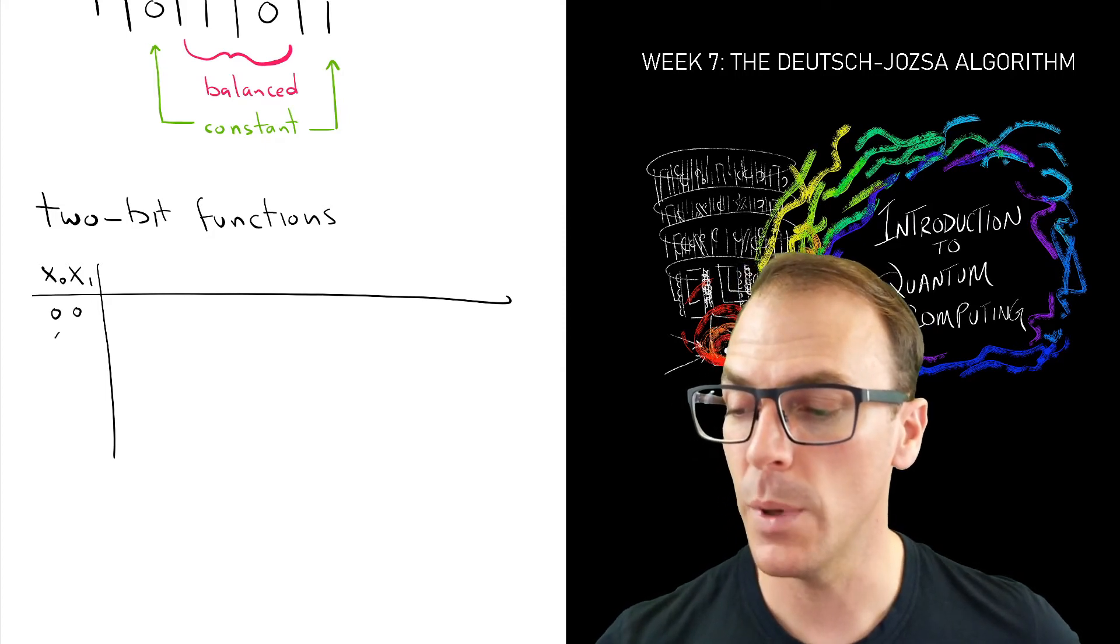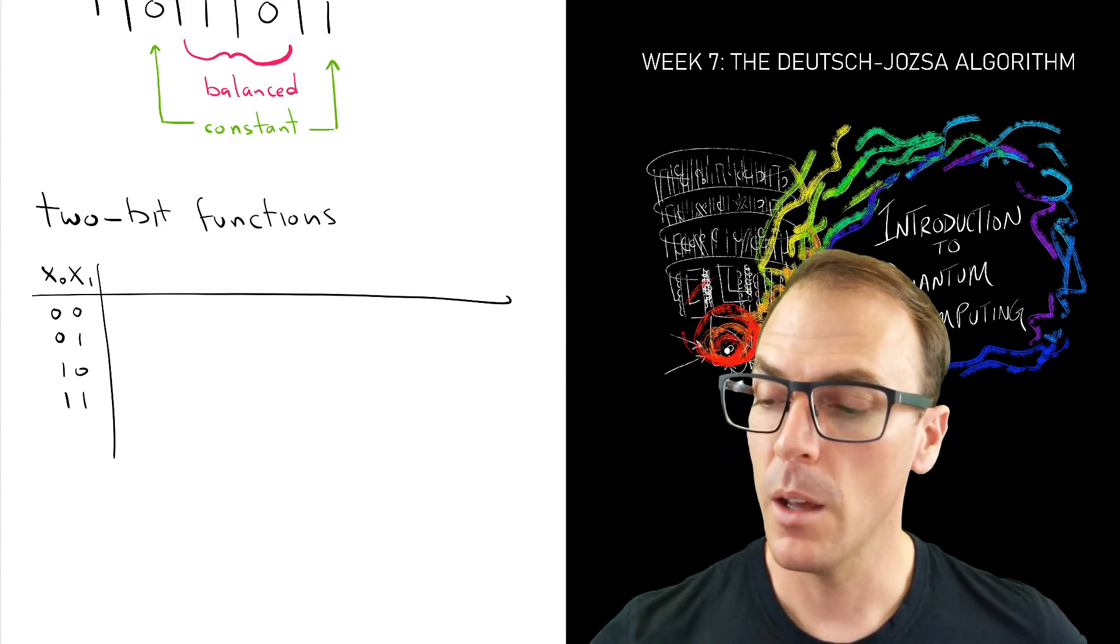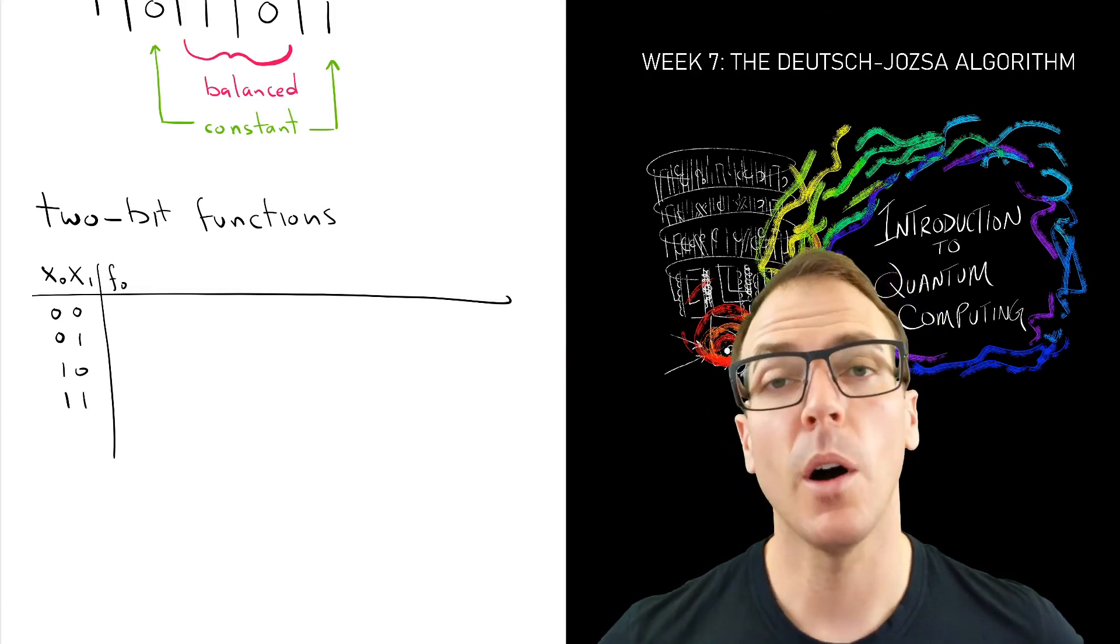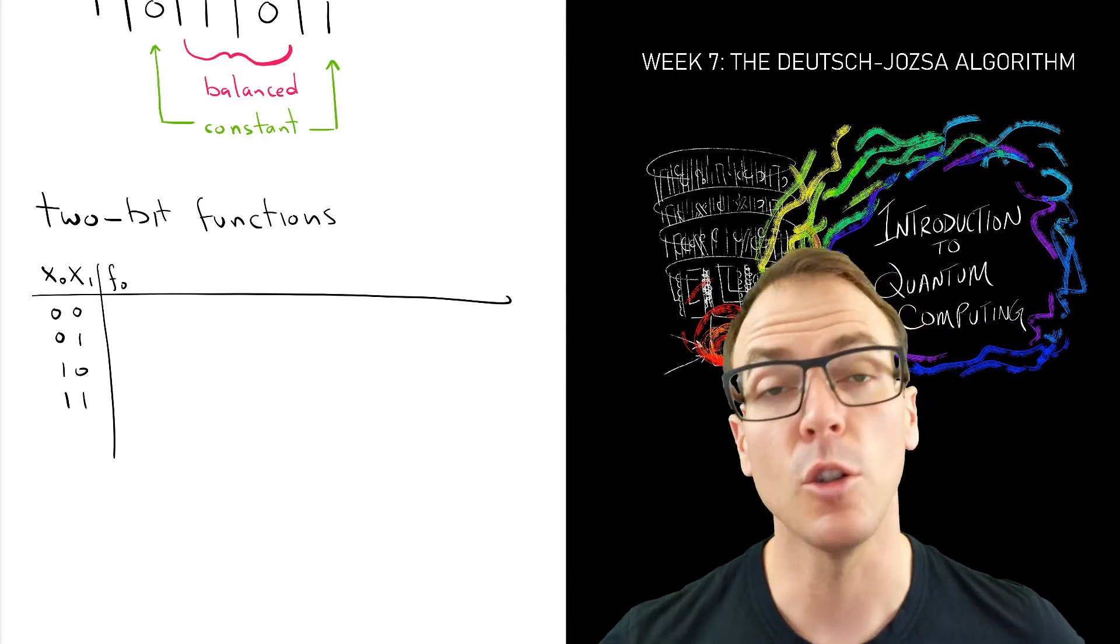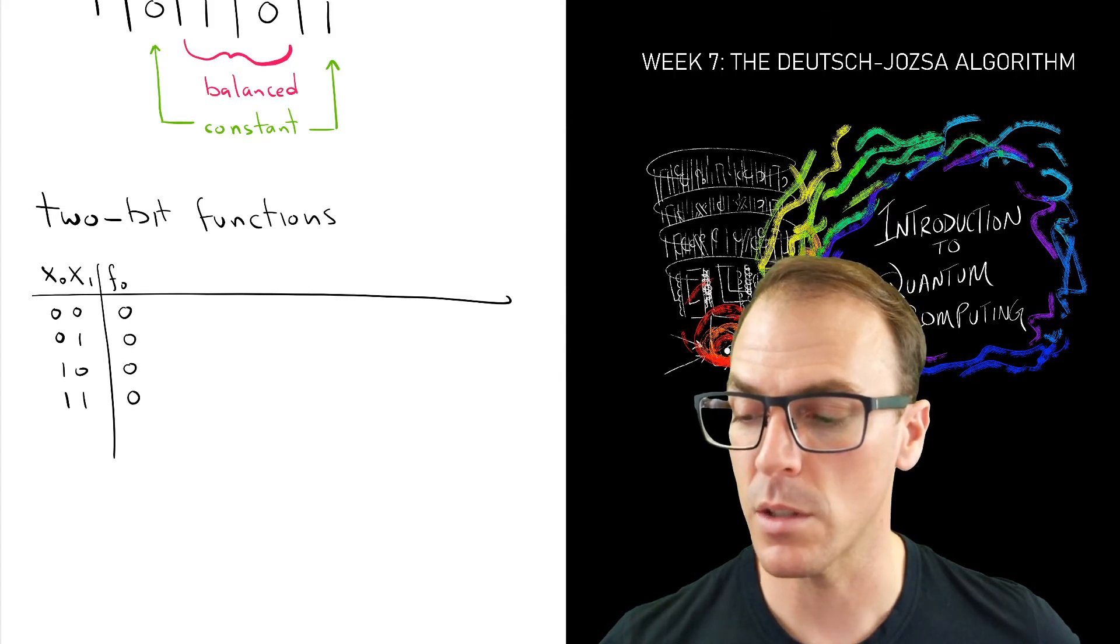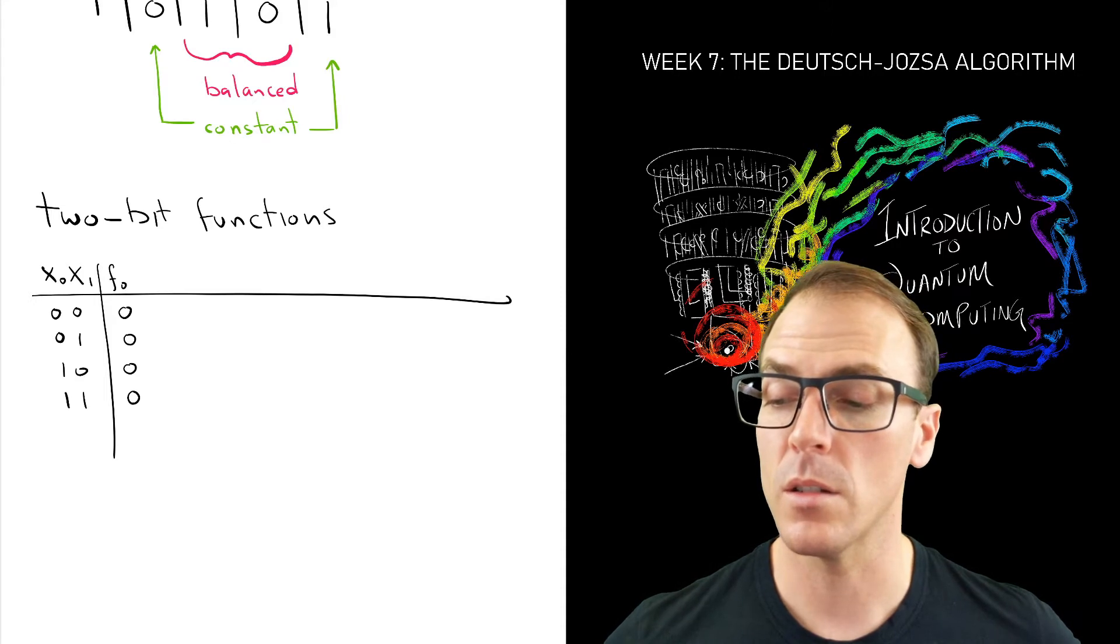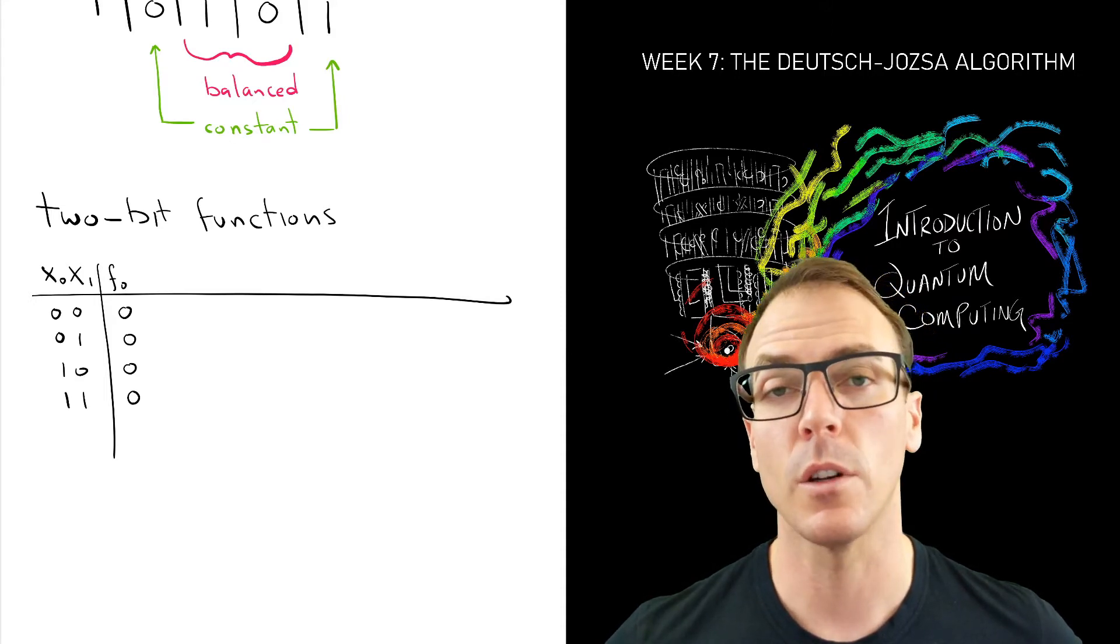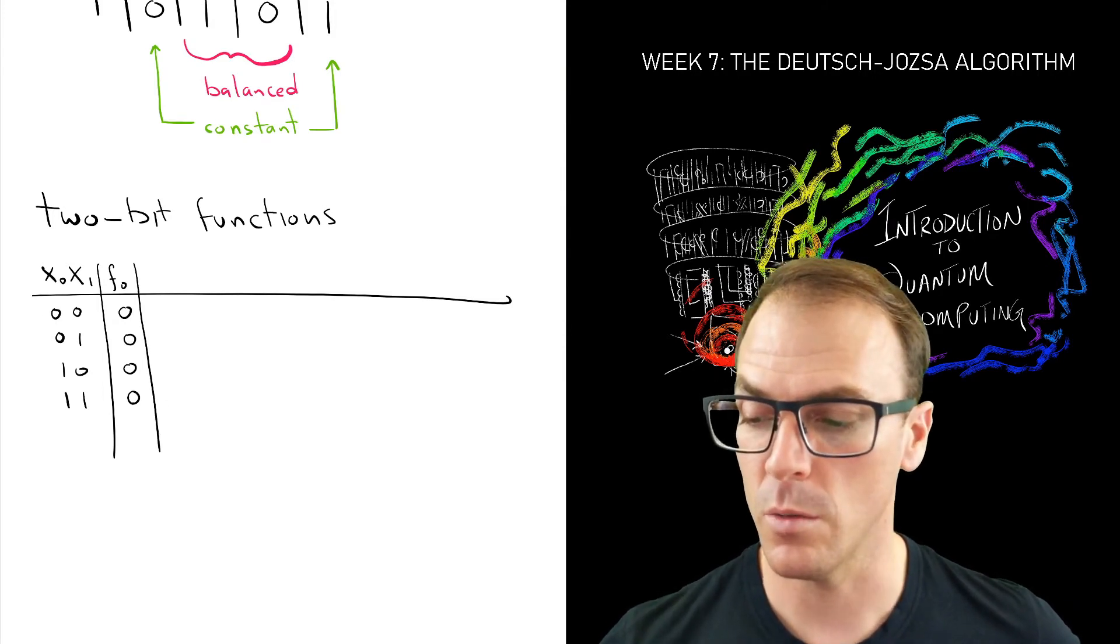So for two bits there are now four possibilities. Okay, so that's not too many. And let's start to enumerate the possible outputs of a two-bit function. So again we could have the one that just produces all zeros. Now there's four inputs and there's two possibilities for each input. That means there's two to the power of four. So 16 possible functions. So we can start to go through.